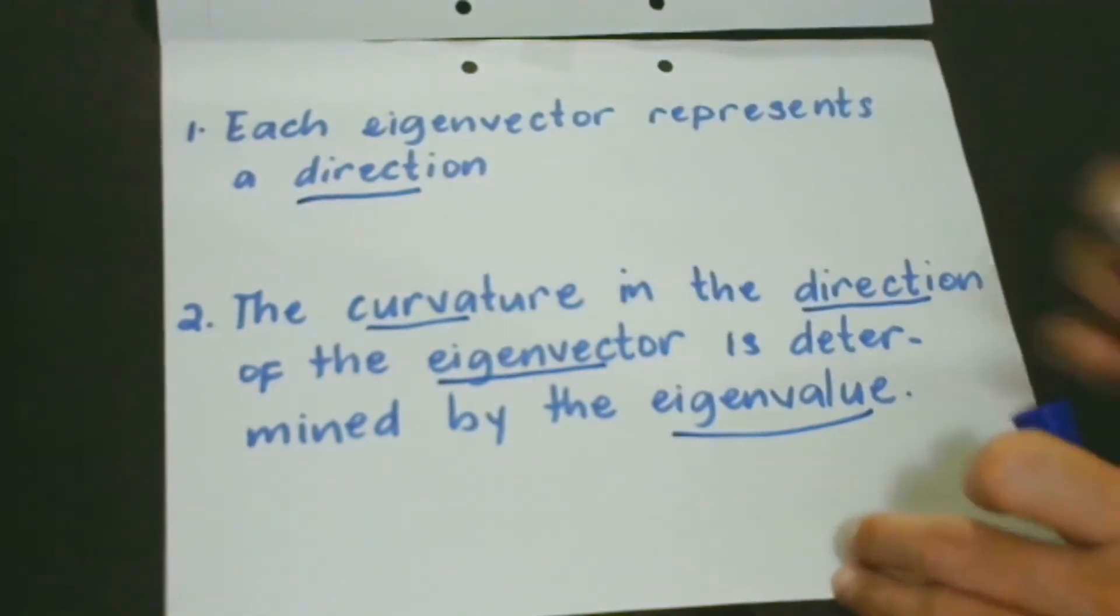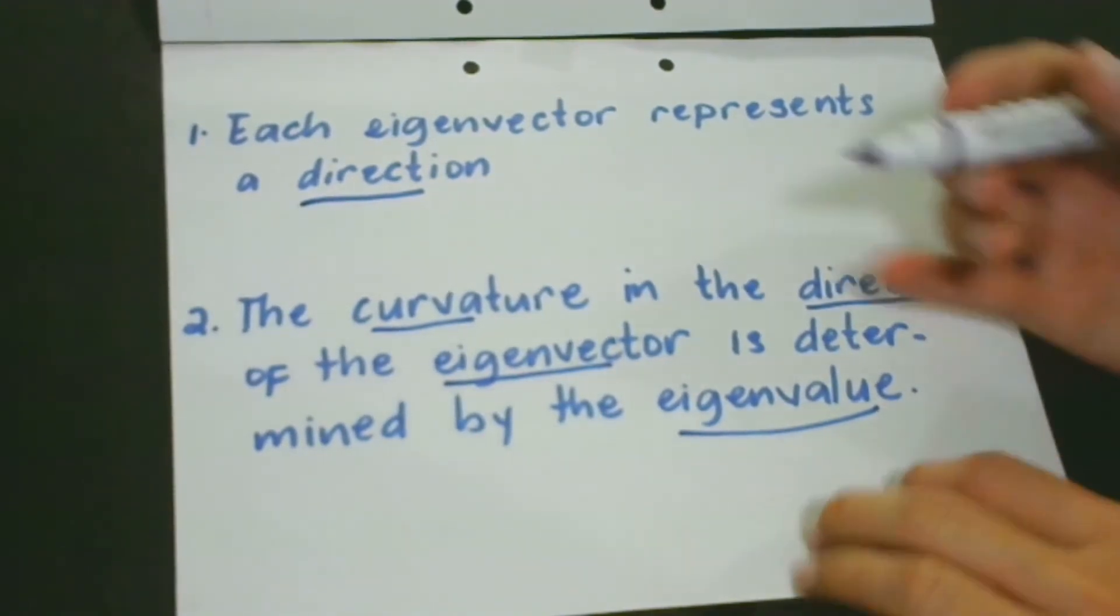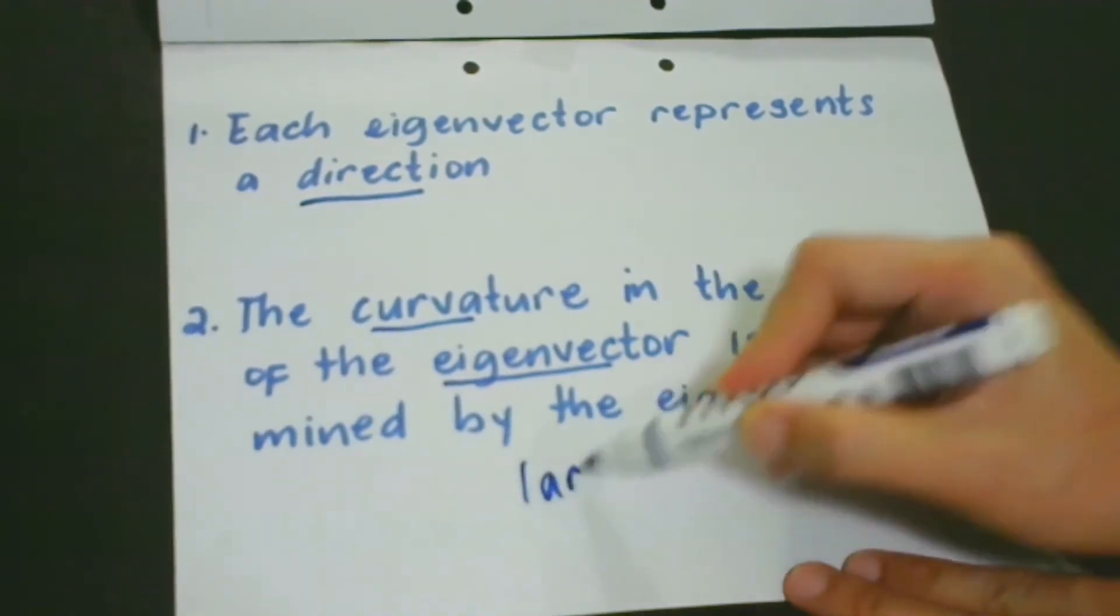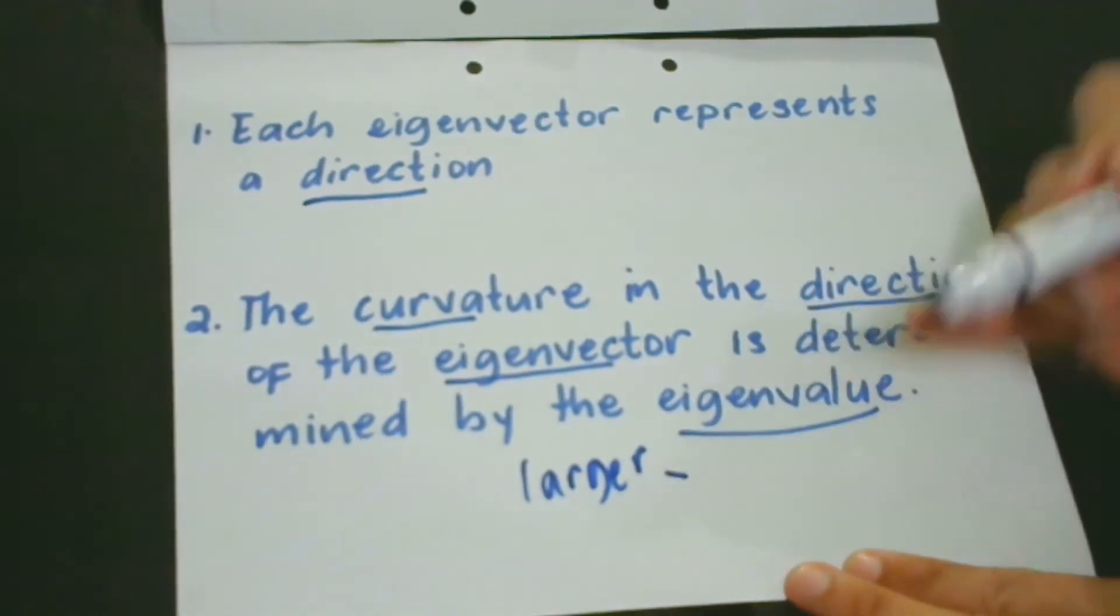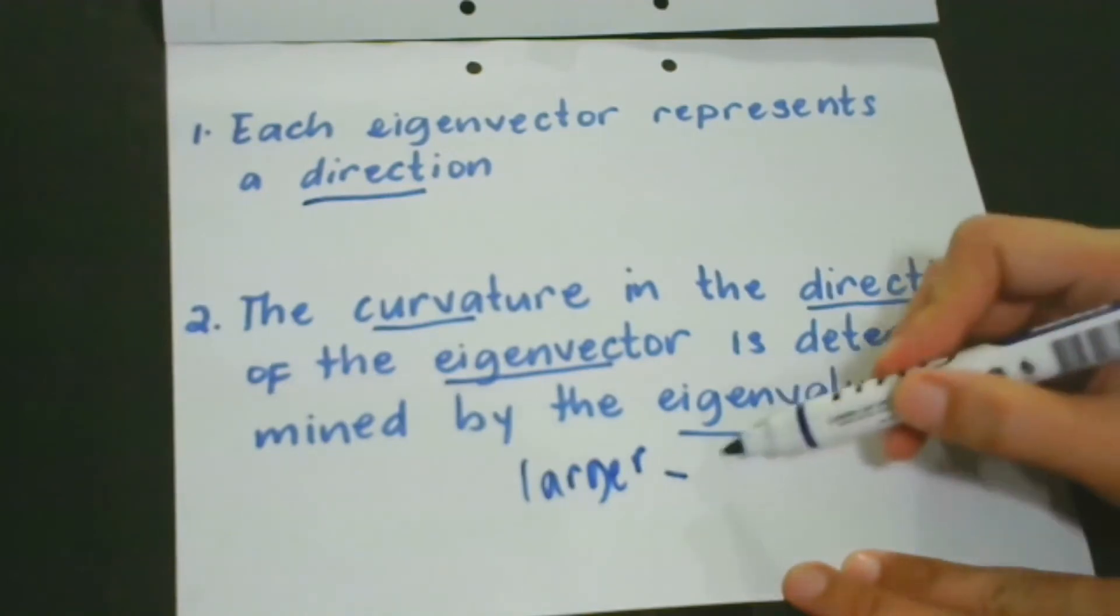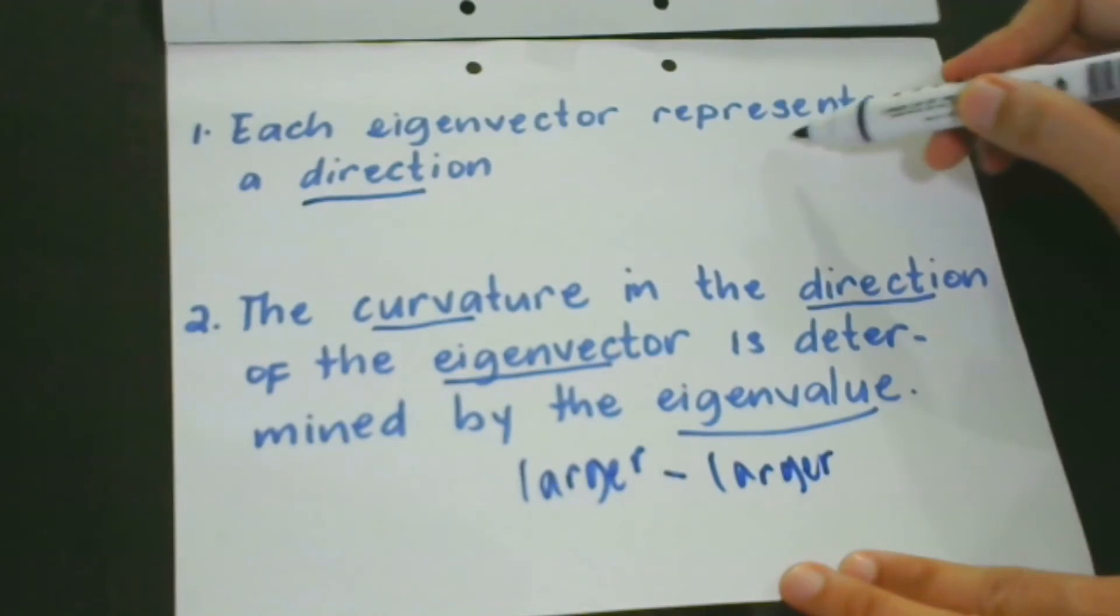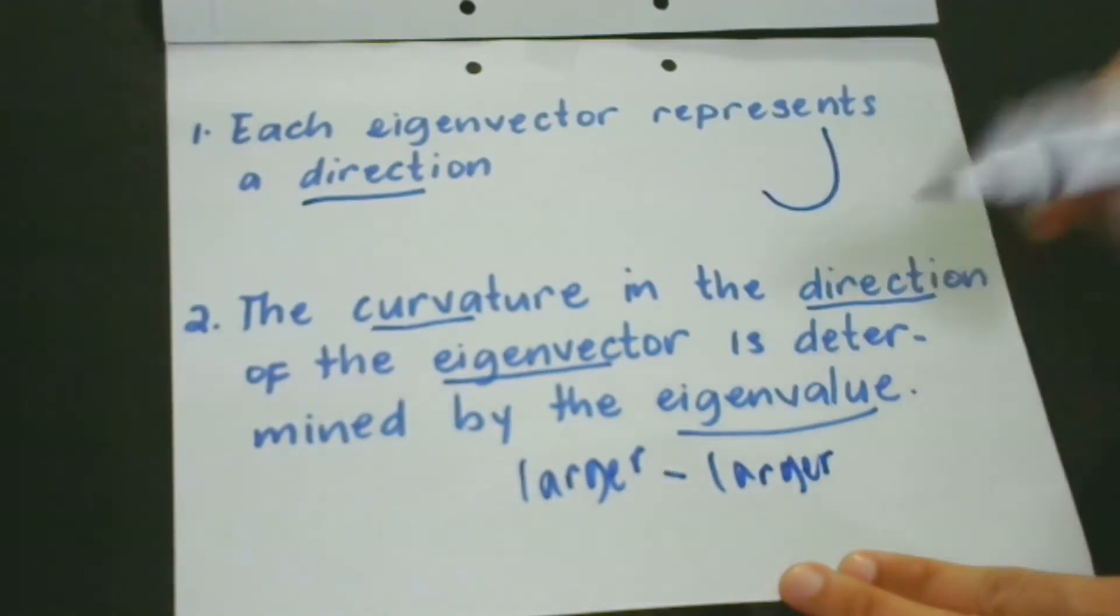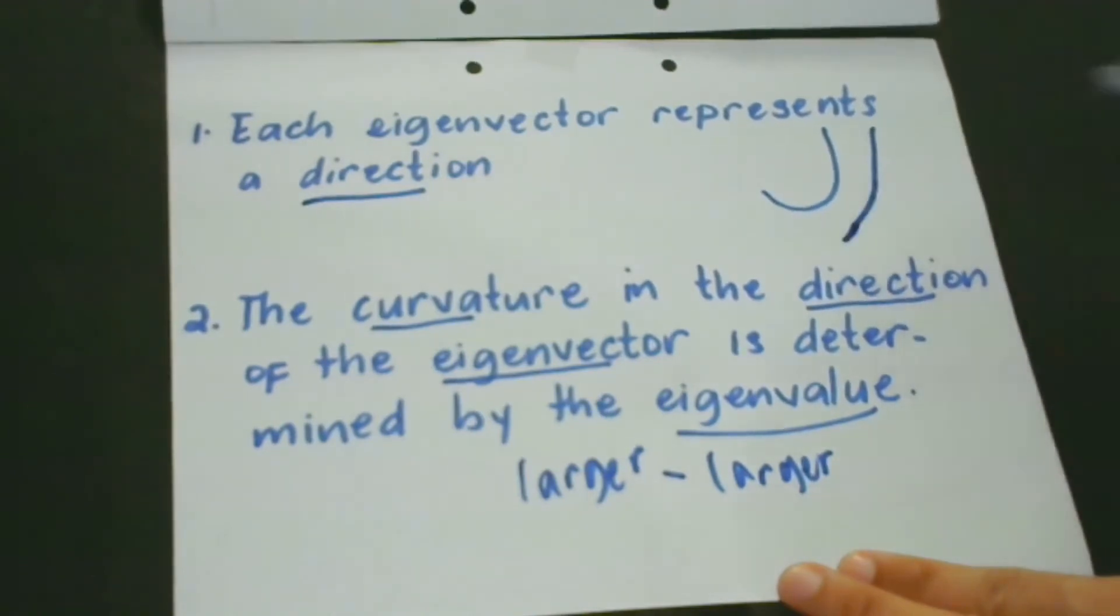What do you think would be the effect of eigenvalue? If our eigenvalue is larger, then we can expect that our curvature is also larger. Remember the curvature? If it is larger, the curvature could be like that. Of course, if it's smaller, we can expect something like this, the curvature is not that large.